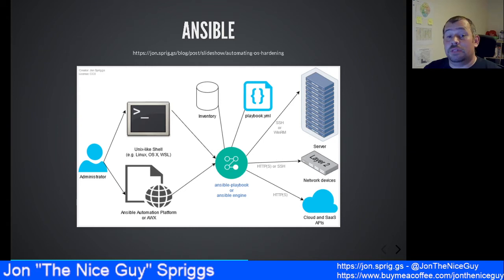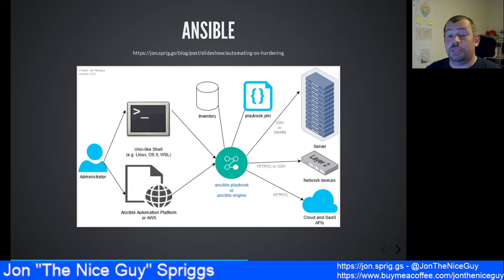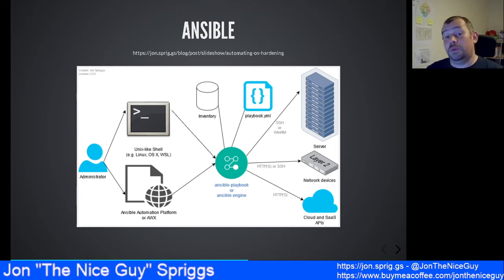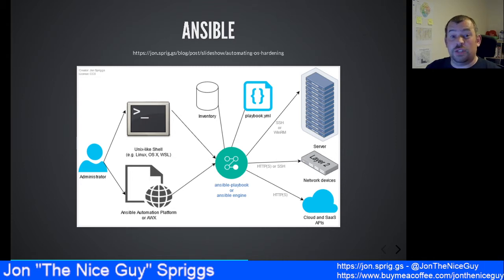Ansible uses an inventory file or an inventory script to determine which hosts it needs to talk to. It also reads a YAML file detailing what plays it's going to execute. A play is a combination of a host selection and a collection of tasks performed sequentially across all those hosts. Each task is executed against a server connected over SSH or WinRM, a network device over HTTPS or SSH, or a cloud or SaaS API over HTTPS.